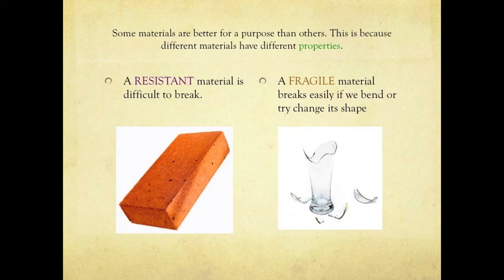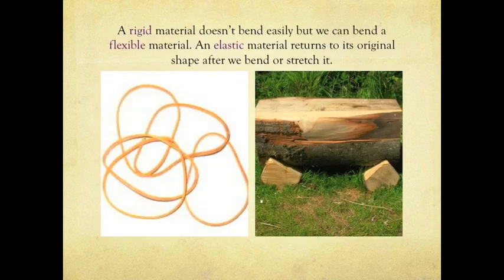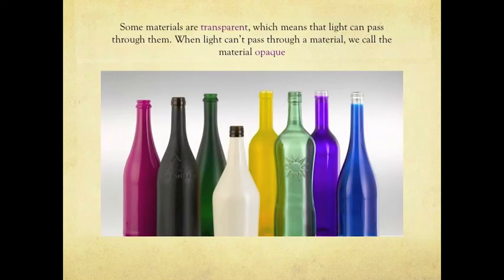Some materials are better for a purpose than others. This is because different materials have different properties. A resistant material is difficult to break. A fragile material breaks easily if we bend or try to change its shape. A rigid material doesn't bend easily, but we can bend a flexible material. An elastic material returns to its original shape after we bend or stretch it. Some materials are transparent, which means that light can pass through them. When light can't pass through a material, we call the material opaque.